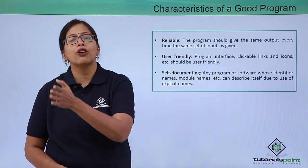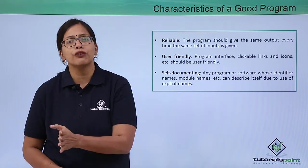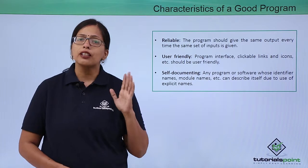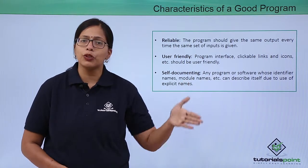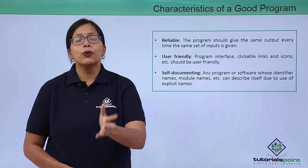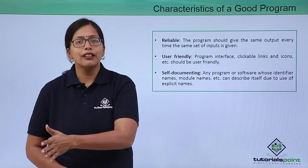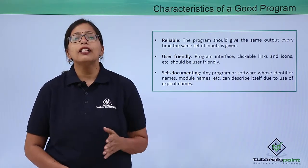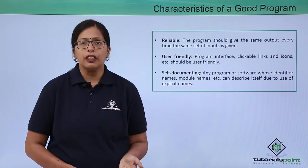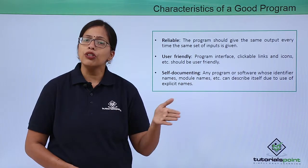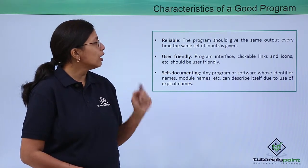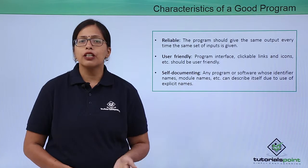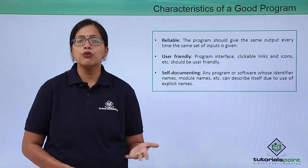Reliable: the program should give the same output every time that software or a part of the software is run. It should not be that once the program is run it gives output A, and after 10, 20, or 30 iterations it gives output B. That should not happen.